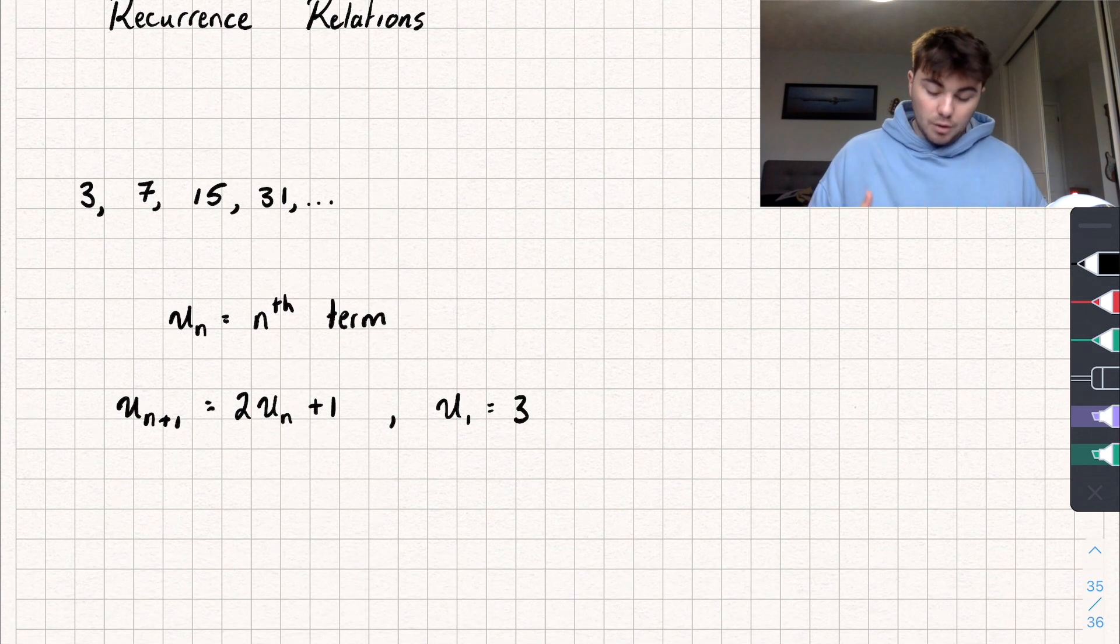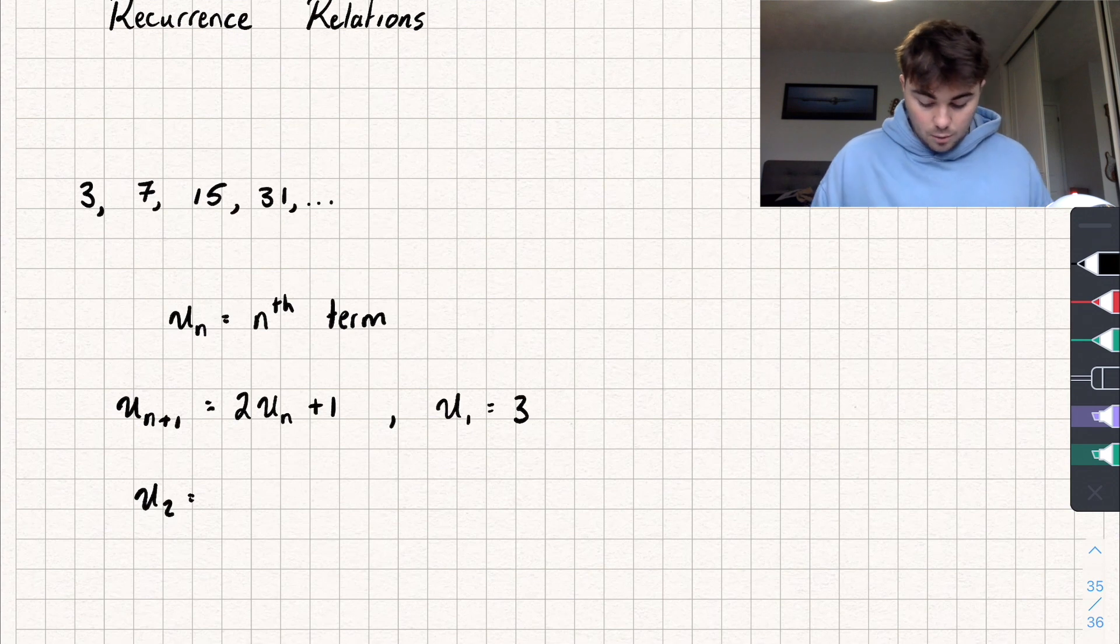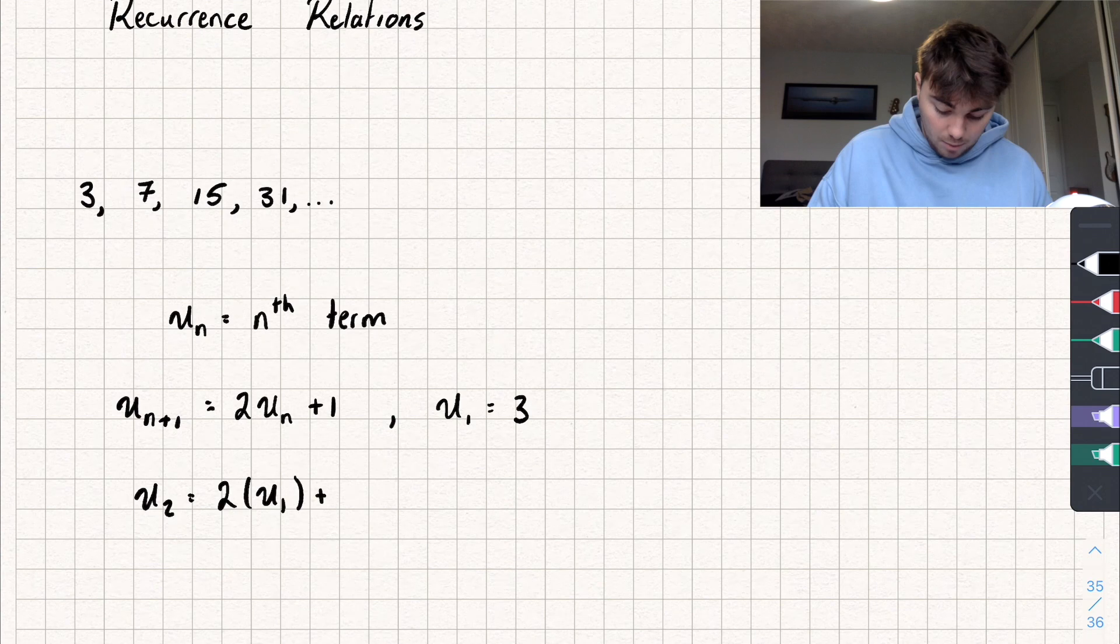So the way this would work is say we want to find the second term. We want to find u_2, that's going to be equal to two times the previous term. So two times u_1 plus one.